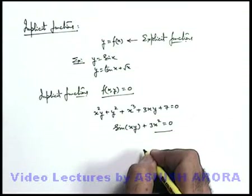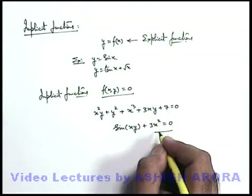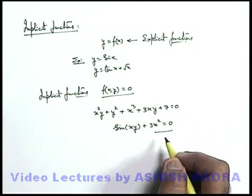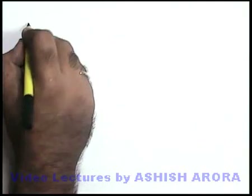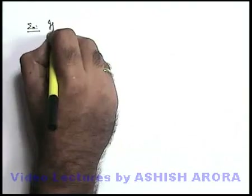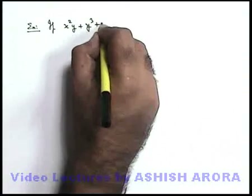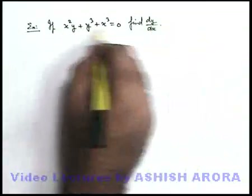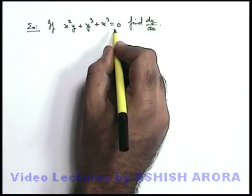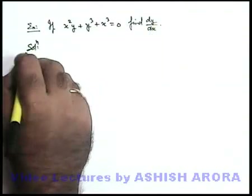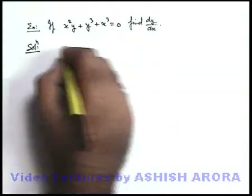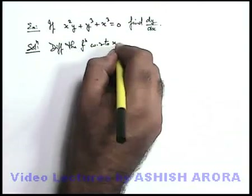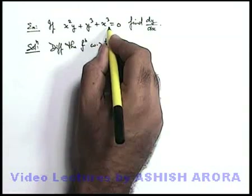Now at the next step we are going to discuss how to differentiate these implicit functions. If we are given x²y + y³ + x³ = 0, we are required to find dy/dx. This is an implicit function in variables x and y. The best way to handle such implicit functions is to directly differentiate the function with respect to x.